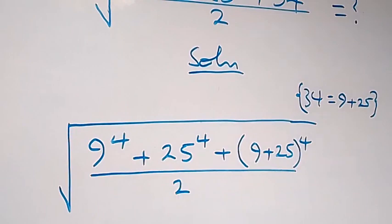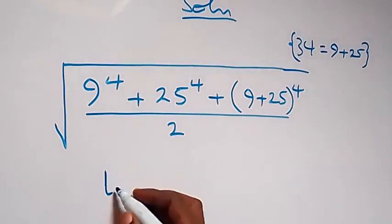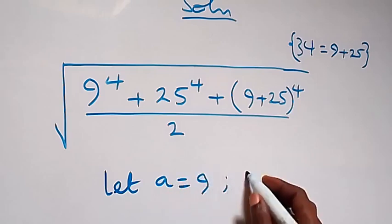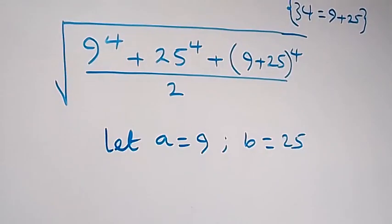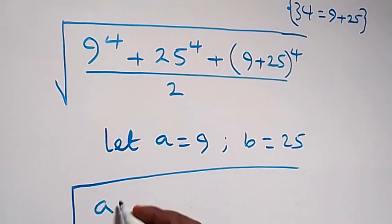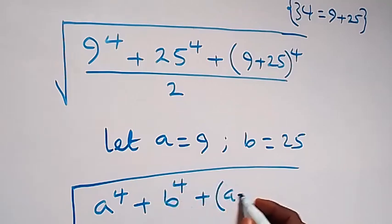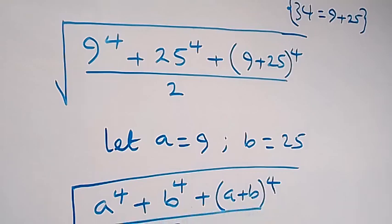To make our work easier, let's represent 9 and 25 with letters. So let a be equal to 9, then b be equal to 25. Then what we have here, we can write this again as square root of a raised to the power of 4, plus b raised to the power of 4, plus open bracket a plus b, close bracket raised to the power of 4, then over 2.